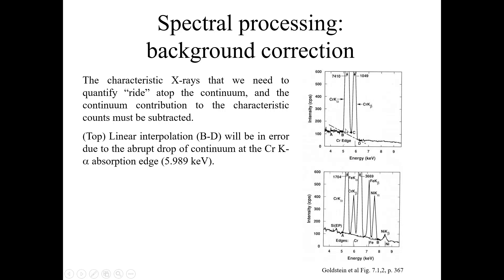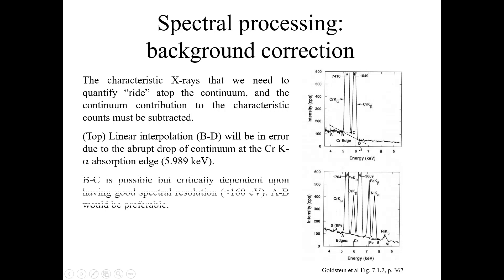Here you can see the linear interpolation from B to D. There will be an error due to the abrupt drop of the continuum at the chromium K-alpha absorption edge, with energy equal to 5.989 keV. The interpolation from B to C is possible but critically dependent upon having good spectral resolution smaller than 160 eV. The A-B approach would be preferable under these conditions.